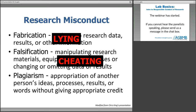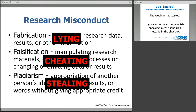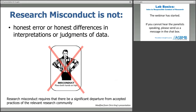Research misconduct is not, as stated on this slide, honest error or honest differences in interpretations or judgments of data — and that's where things can become very gray. Some people will view a piece of data as completely appropriate; others with different biases will view it as inappropriate. Each institution has a robust structure to investigate research misconduct and determine whether an honest error of judgment underlies the problem or if there's actually been a case of falsification, plagiarism, or fabrication. This is something that an institution has structures in place to assess, to ensure the integrity of the research enterprise.